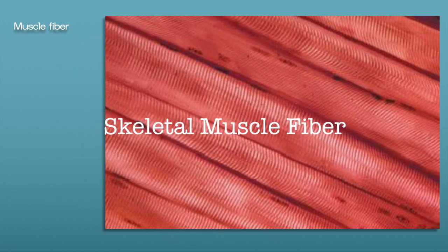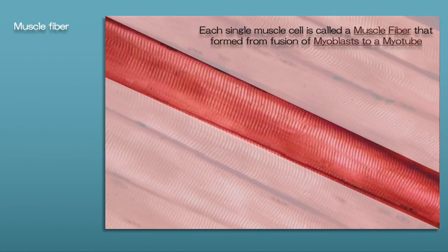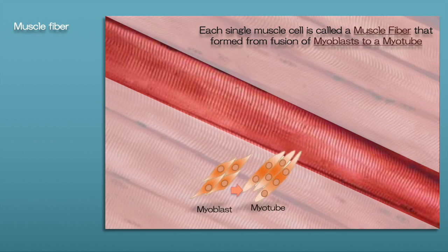A single skeletal muscle cell is known as a muscle fiber. Muscle fibers are formed by the fusion of myoblasts into the myotube. Myoblasts are made by differentiated stem cells called satellite-like cells.